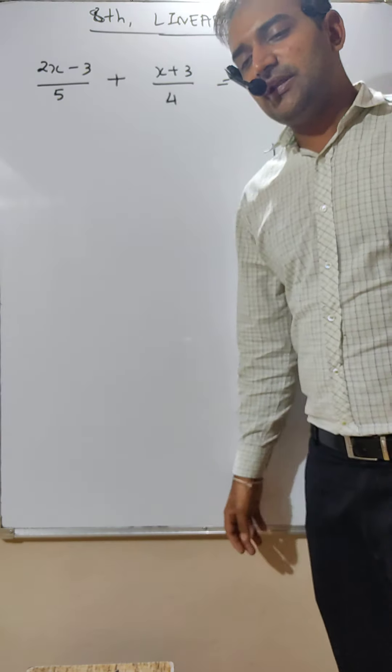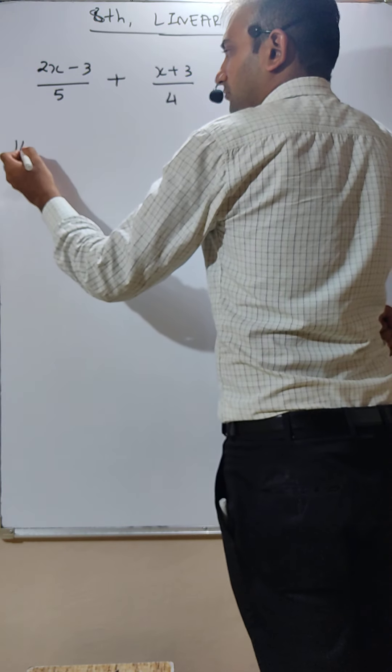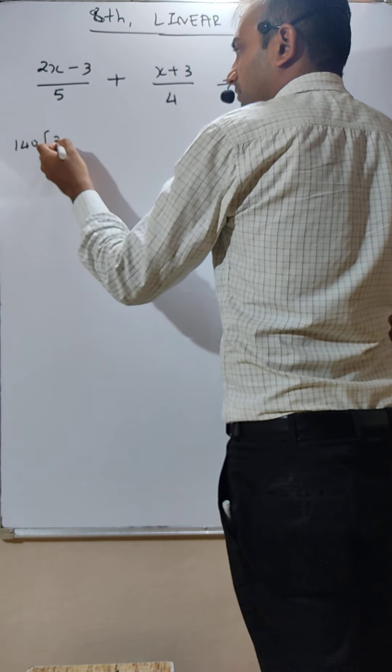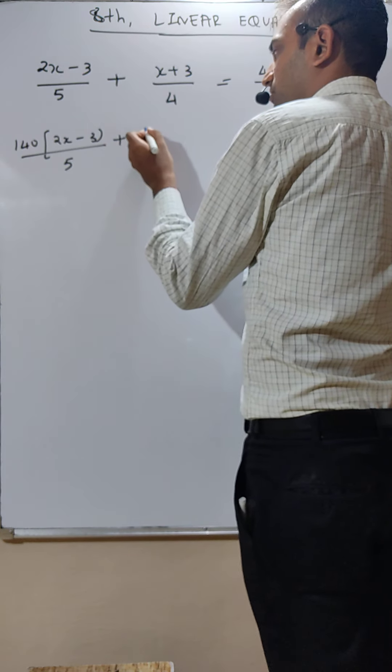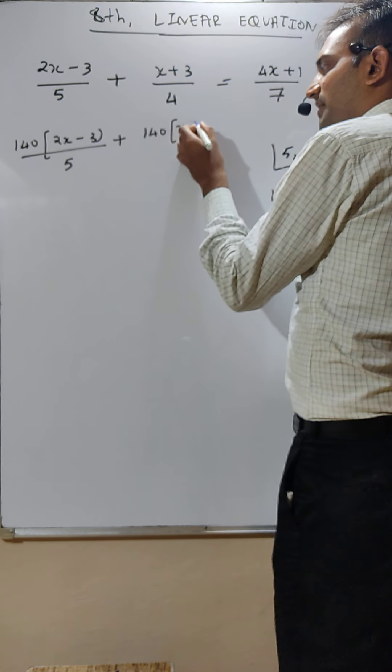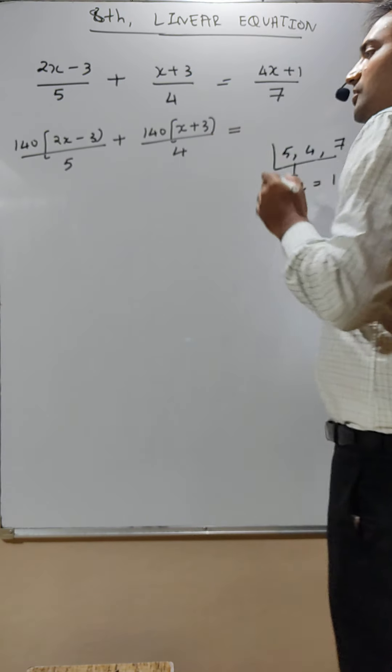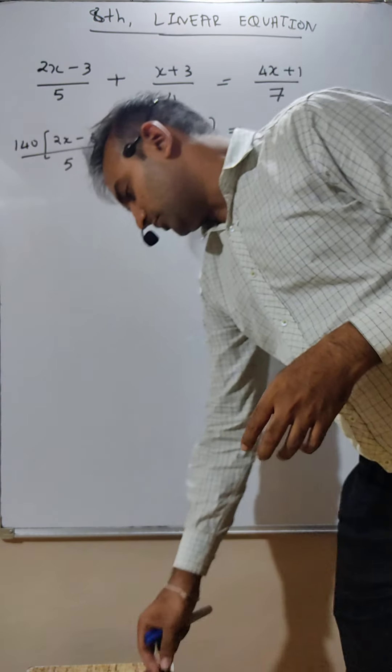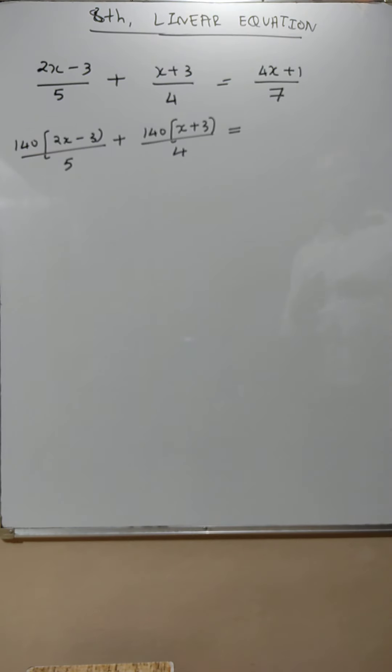So you multiply everything by 140. Just see here how I do. 140 bracket 2x minus 3 by 5 plus 140 bracket, compulsory bracket aana hai, x plus 3 by 4 is equal to 140 bracket 4x plus 1 by 7.